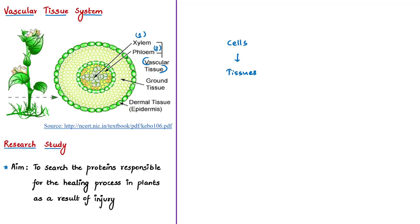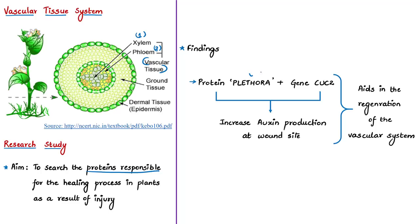The researchers tried to mimic or imitate natural injuries in the growing leaf and stem of plants and studied how the repair mechanism happens at the level of tissues. They searched for the proteins responsible for this healing process and found that a protein named plethora helps in this regeneration process. Here, regeneration refers to regeneration of the vascular system at the site of injury or wound. This protein plethora binds to a gene called CUC2 and activates its expression.